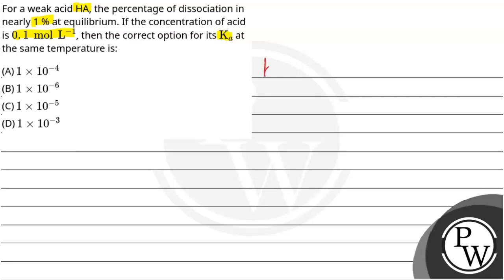For this question, our key concept is Ka of weak acid. So first we have to write the given data.